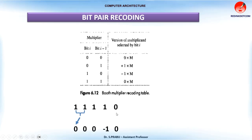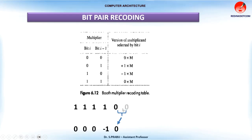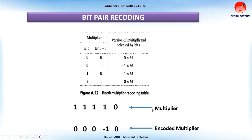Suppose this is your multiplier value — you compare two successive values using the table to identify the corresponding recoded digit. Then compare the next two values and write the corresponding digit. For example, 1,1 gives 0; 1,0 gives minus 1. By default, q0 is 0 as in sign bit multiplication. Then compare 0,0 which gives 0. This is the original multiplier and this is the encoded or recoded multiplier.